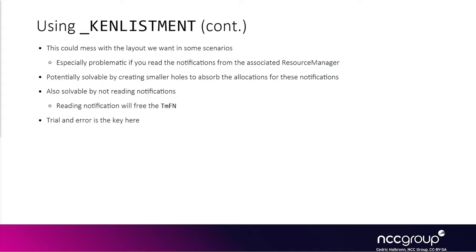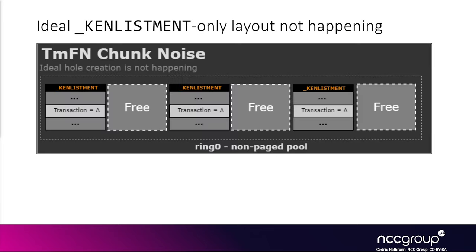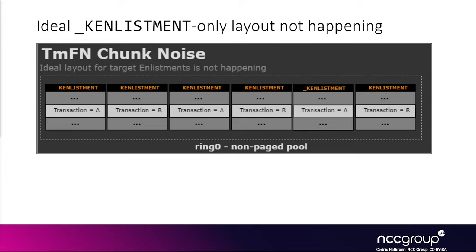To work around this, we could avoid reading the notifications, but it's handy to figure out from userland which k-enlistment has just been touched by the kernel. Another method is to preliminarily create smaller holes with other structures to absorb the notification chunks later when we do the k-enlistment-based feng shui. Previously we wanted a layout with enlistments from transactions A and B, freeing B's enlistments to create holes, then allocating enlistments for transaction R to trigger the race.